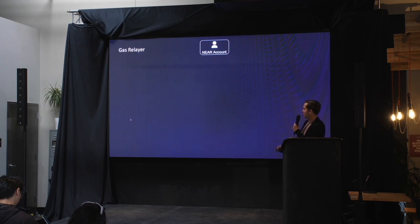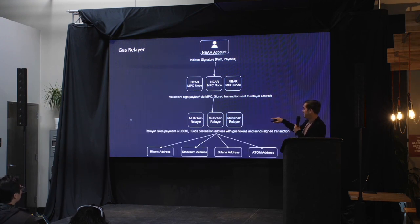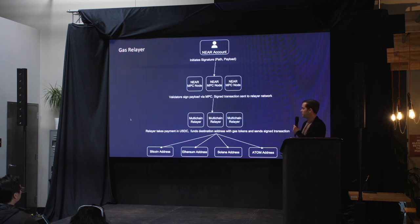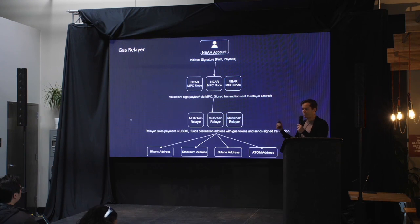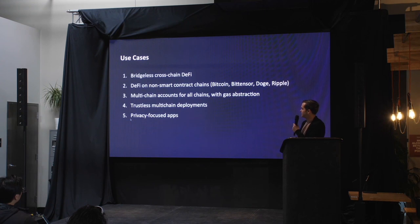We're also launching a product called the Multi-chain Gas Relayer. In this flow, the MPC nodes make the signed transaction available to a network of relayers, which take payment from you in some token on the NEAR side — for example SWEAT or USDC if you want something non-volatile. The relayers then fund the destination account with gas tokens just in time, and you can send your signed payload right behind it — potentially even in the same block. So you're sitting there with USDC but paying for transactions on Bitcoin, Ethereum, Cosmos, or whatever.